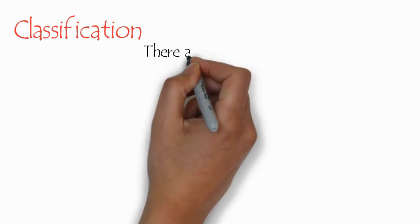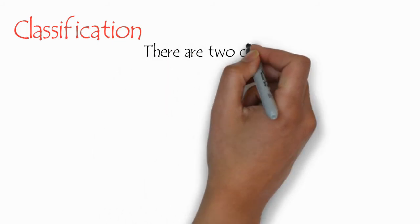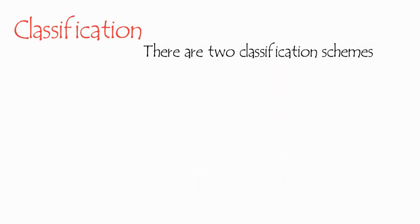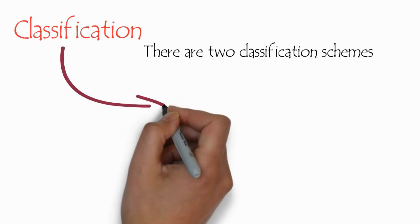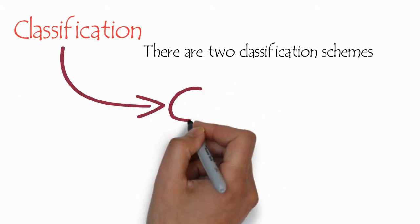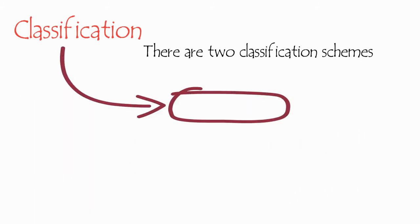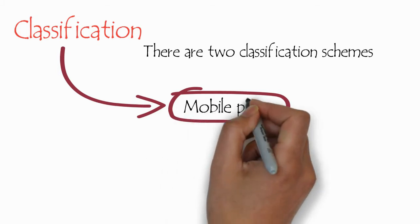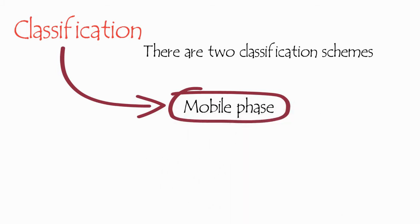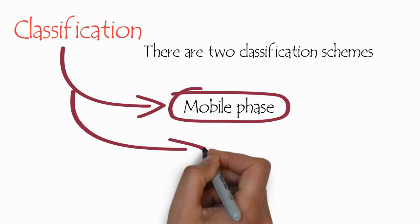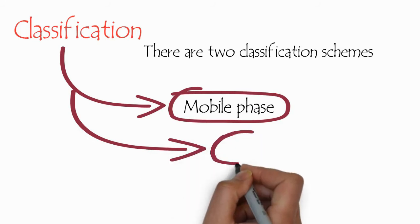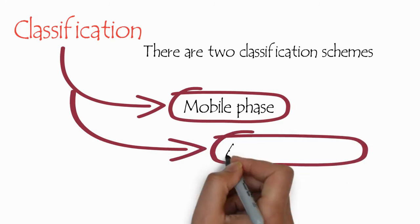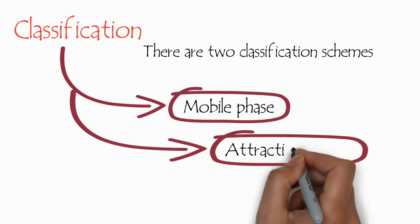Classification, or the types of chromatography, are based on two type classification schemes. The first one is based on mobile phase. The second type of classification is based on attractive forces.